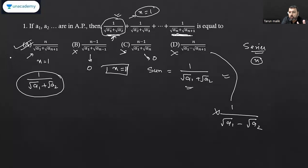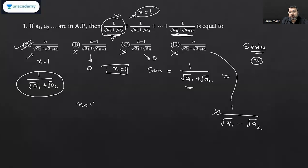In case two options give the same value at n = 1, you can also put n = 2. The point is: even if you don't know how to solve the question, you can apply this trick. At n = 1 the sum is the first term; at n = 2 it is the sum of the first two terms, which can be easily calculated. You can also try n = 0 — if there are no terms, the sum must be 0. So any option that doesn't give 0 at n = 0 is ruled out.